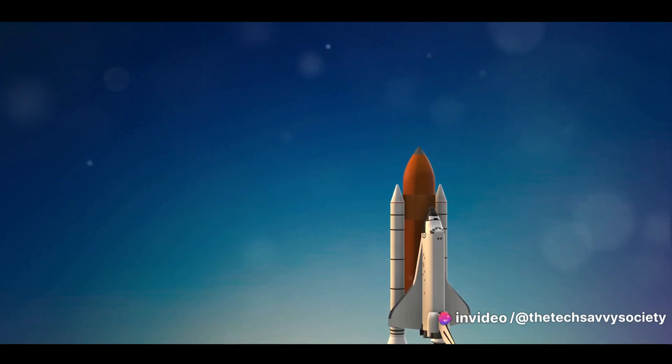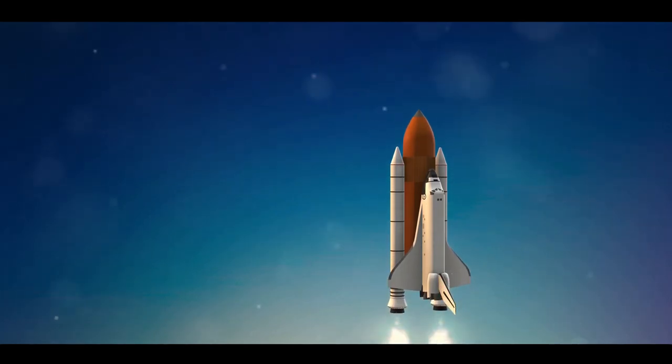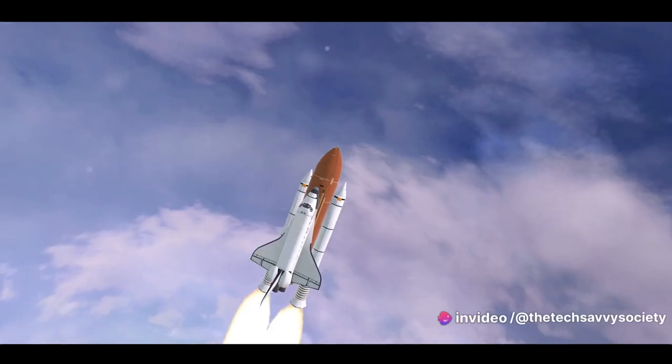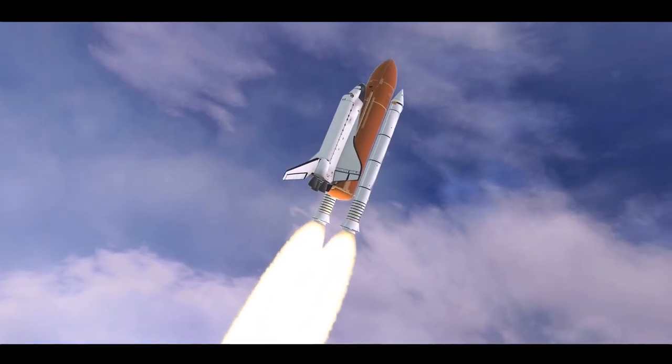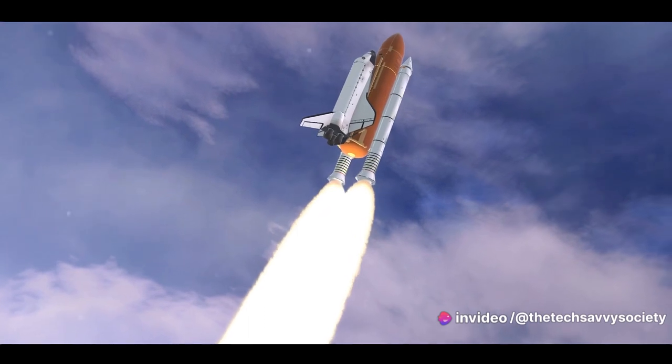Cut to a close-up of an astronaut's gloved hand gripping a tool as they float outside the ISS. The camera then pans out to reveal the vastness of space, with the Earth and stars in the background. The astronaut's visor reflects the awe-inspiring view.